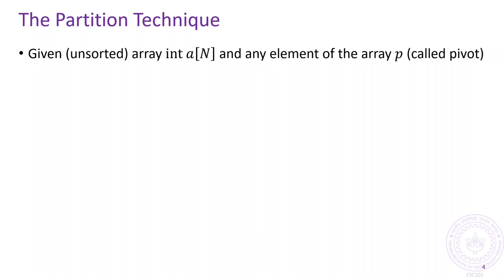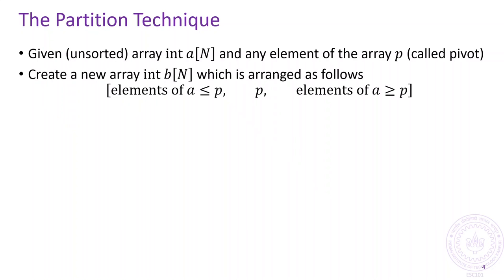Say we have an unsorted array A with n elements and let us choose one of those elements P and call it the pivot. The partitioning technique then rearranges the elements in the array so that all elements smaller than P come first, followed by the pivot element P itself, followed by all elements larger than P.